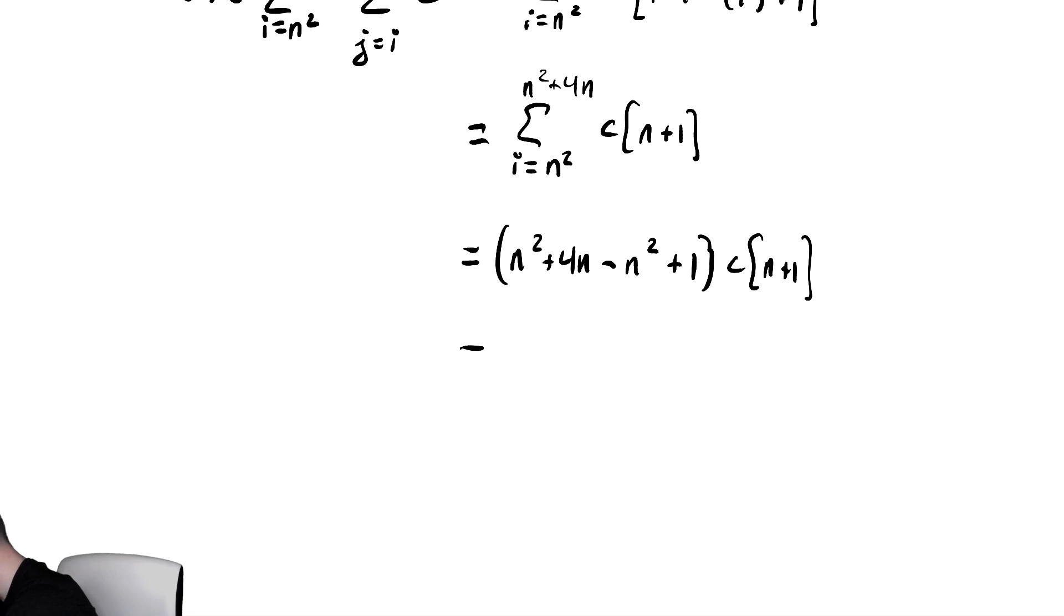Let's do our little bit of algebra here. Notice the n squareds also cancel. So this is 4n plus 1 times c times n plus 1. Hopefully we can look at this and go, that's something like n times something like n. This is going to be in theta of n squared. So even though i appeared inside of the summation originally, it actually canceled out and went away. So this is in theta of n squared.